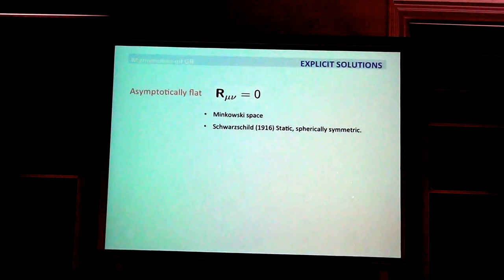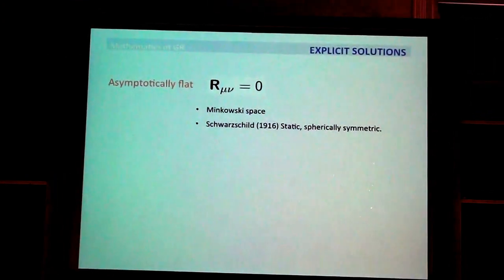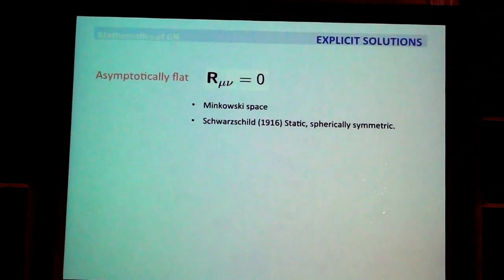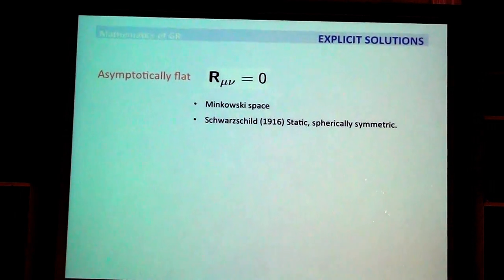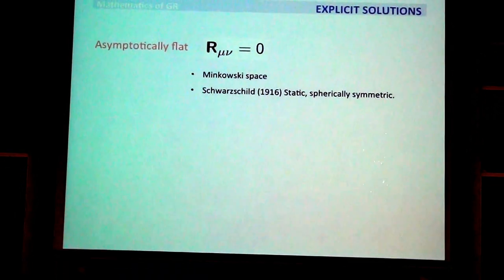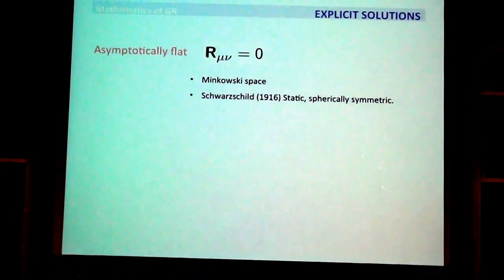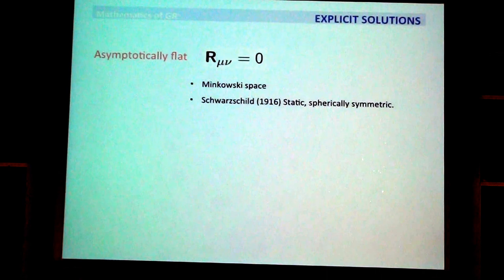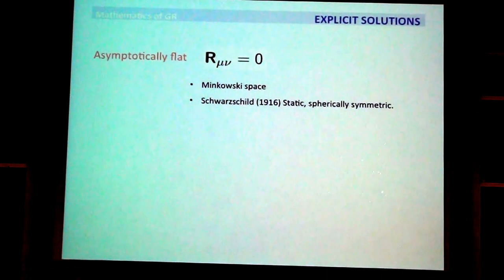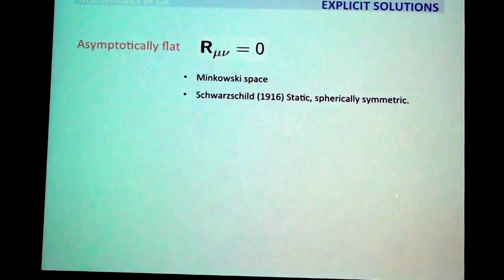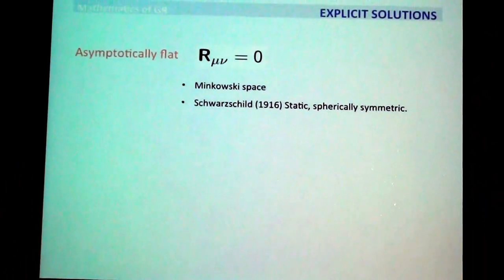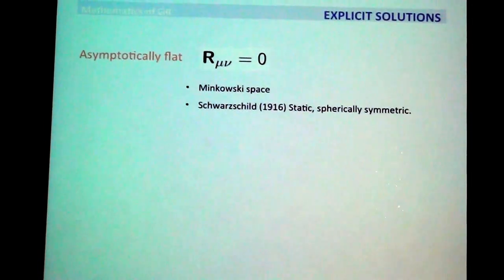Schwarzschild discovered it while he was on the war front, in the trenches of World War One — a sad story but a remarkable achievement. The important family of solutions are the Kerr solutions. These are solutions in the asymptotically flat case, meaning isolated physical systems where interesting things happen in some region of space and as you go out there's no matter anymore.